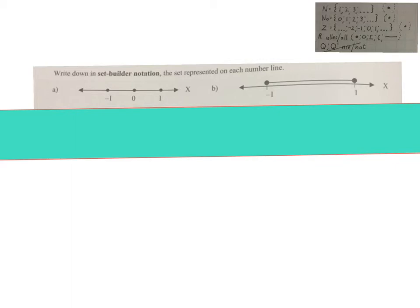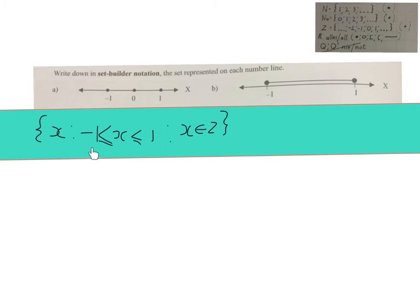This question asks: write down in set builder notation the set represented on each number line. Here I can see it's not real numbers — there are distinct points at minus 1, 0, and 1, so I'm going to use integers. We're working with the numbers minus 1, 0, and 1. The answer looks like this: you start at the back by saying these are integers, and then put the restriction. There's more than one possible answer here — for example, X is smaller than 2 and bigger than minus 2 still gives the same result.